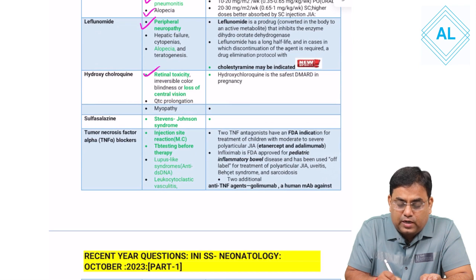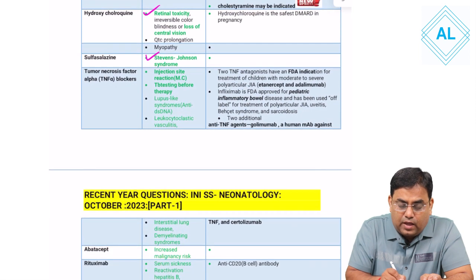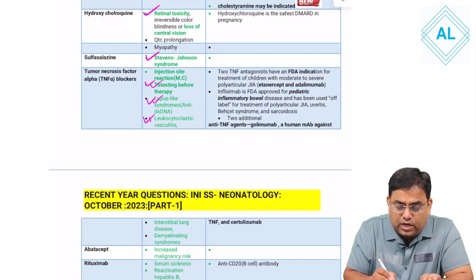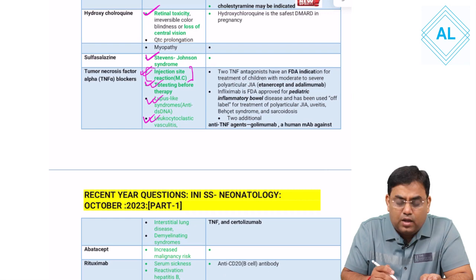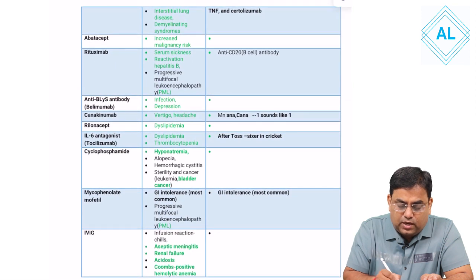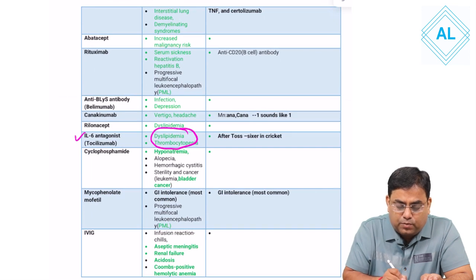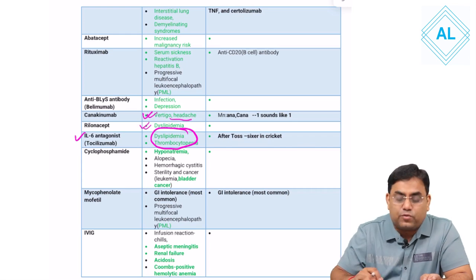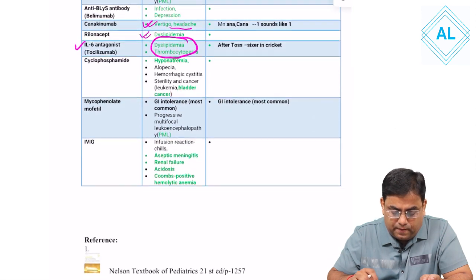Chloroquine and hydroxychloroquine cause retinal toxicity and QTc prolongation. Sulfasalazine causes Stevens-Johnson syndrome. TNF-alpha blockers like infliximab are associated with TB reactivation, lupus-like syndrome, leukocytoclastic vasculitis, and injection site reaction as the most common side effect. Interleukin-6 blockers have side effects of dyslipidemia and thrombocytopenia. These drug side effect associations are very important for MCQs.